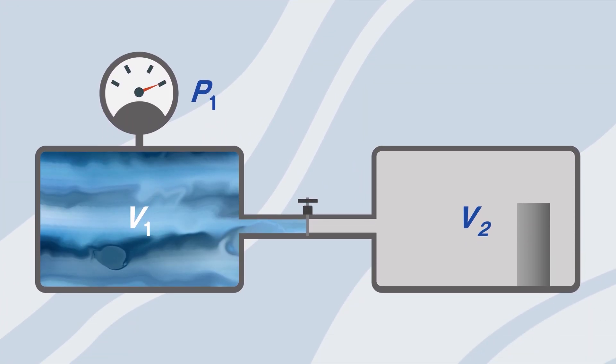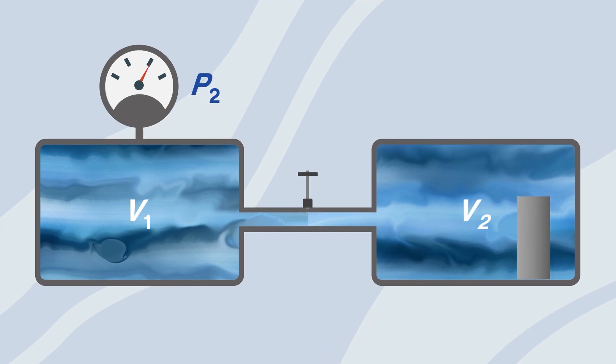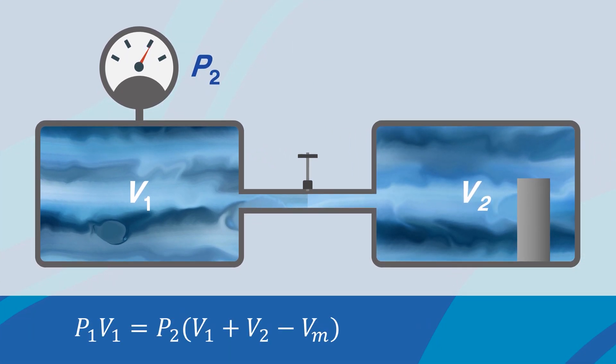Third, if we consider an actual case where we have a rock inside chamber 2, then Boyle's law becomes p1v1 equals p2 times v1 plus v2 minus vm. In this case, helium will access all the chambers and the porous spaces. The only space helium will not access is the matrix volume, as it's not porous.